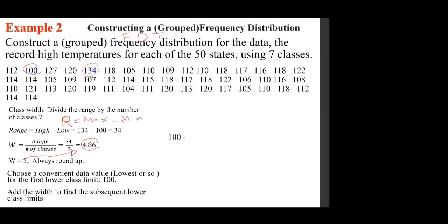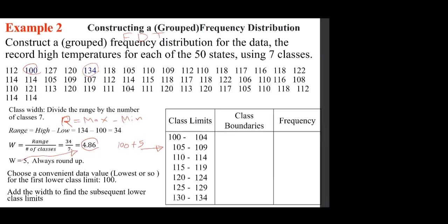We are going to start with 100. The width is five, so the next lower class limit is 100 plus 5 equals 105, then 110, all the way to 130. We keep adding the width of five to get each subsequent lower class limit, giving us seven classes total.